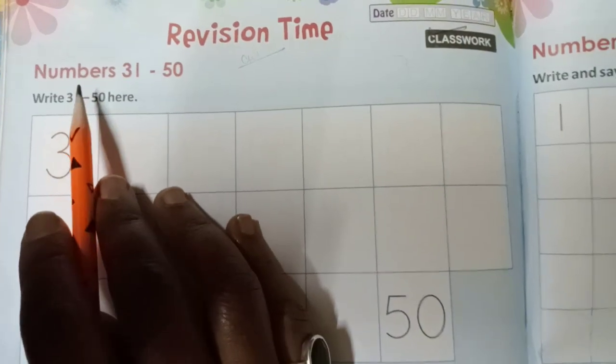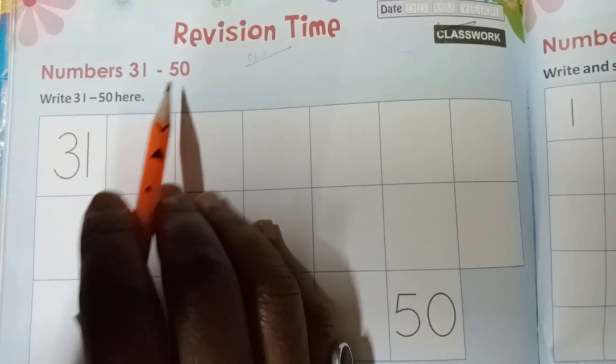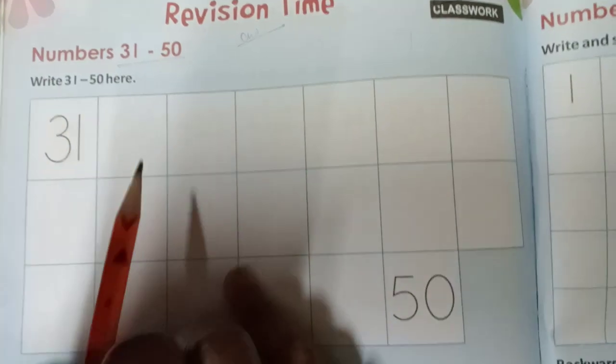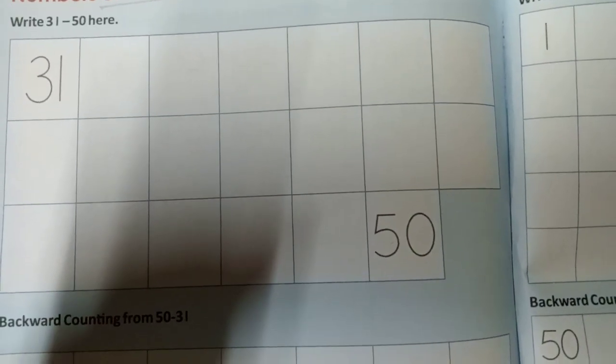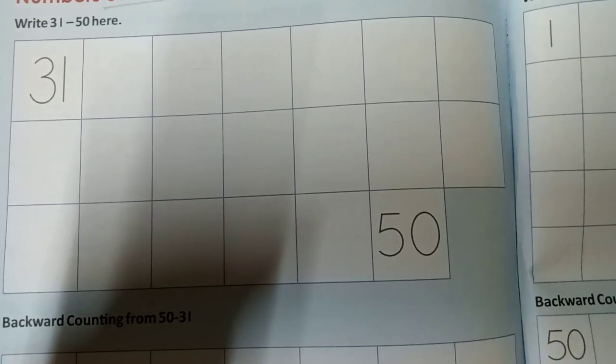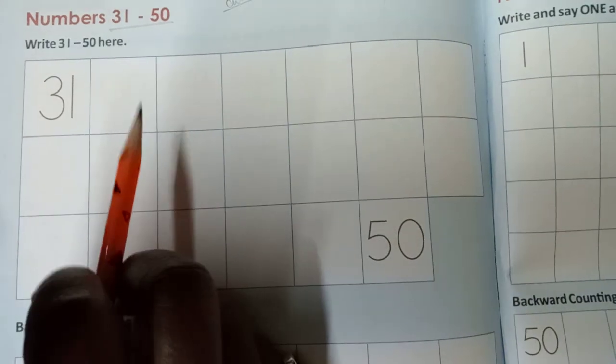So today we do numbers 31 to 50. I am going to write 31 to 50. So I am going to start page number 152.